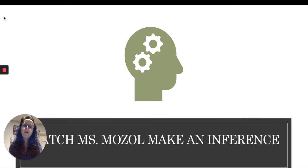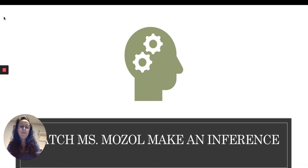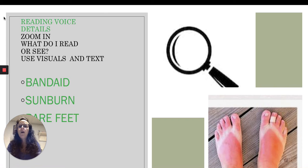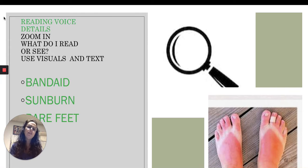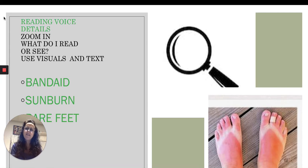Let's practice this, but first I want you to watch me make an inference. I'm going to use my reading voice and use a magnifying glass to zoom in on what I see. Looking at this picture, I'm going to say exactly what I see: I see toes, I see a band-aid, I see what looks like sunburn, I see bare feet. Those are the details.